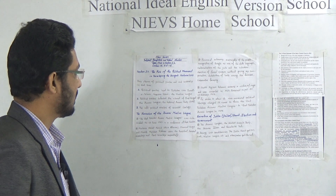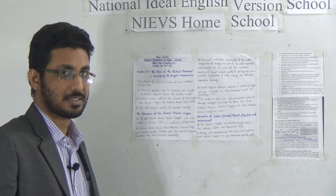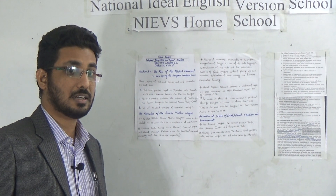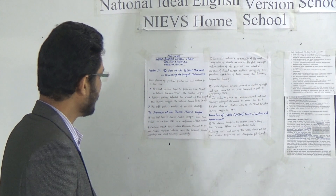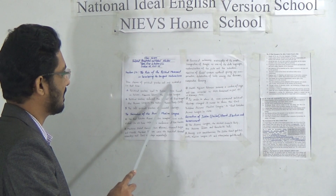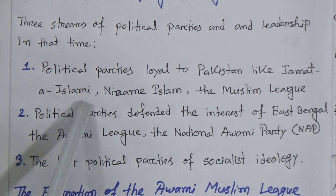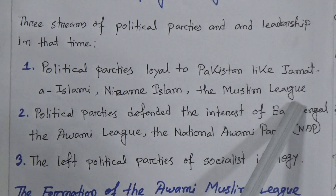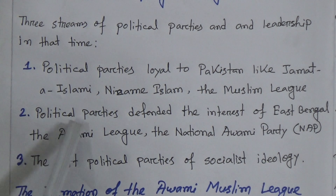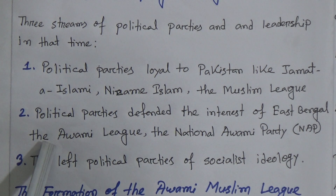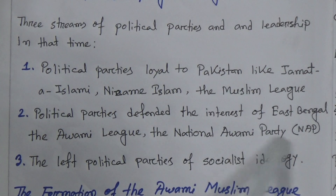At that time there were three streams of political parties that contributed a lot in the movements. Number one: political parties loyal to Pakistan, like Jamaat-e-Islami, Nizam-e-Islam, and the Muslim League. Number two: political parties that defended the interest of East Bengal — the Awami League and the National Awami Party (NAP). Number three: the left political parties of socialist ideology.